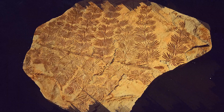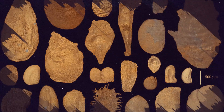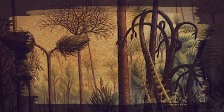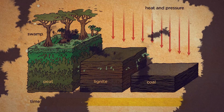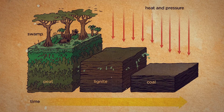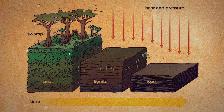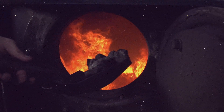One of the most significant developments in plant evolution during the Carboniferous was the widespread appearance of seeds. This adaptation allowed plants to reproduce in drier environments, paving the way for colonization of more diverse terrestrial habitats. The incredible abundance and diversity of plants during the Carboniferous led to the formation of vast coal deposits. As plants died and fell into swampy waters, they were quickly buried by sediment. Over millions of years, these layers of plant material were compressed and transformed into the very coal seams that have fueled human industry for centuries.